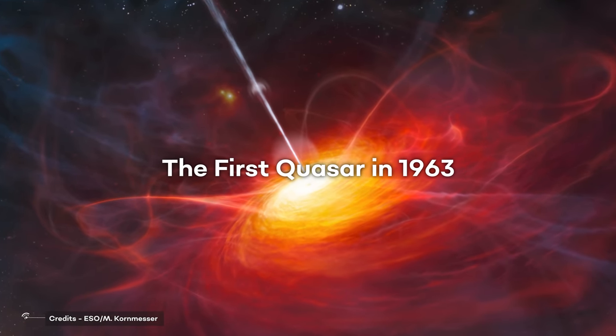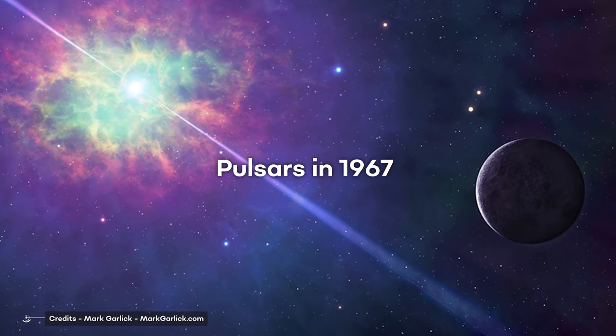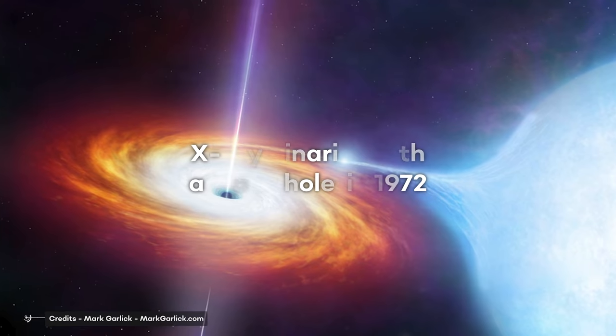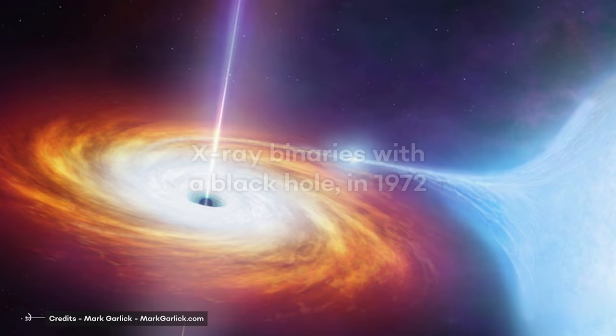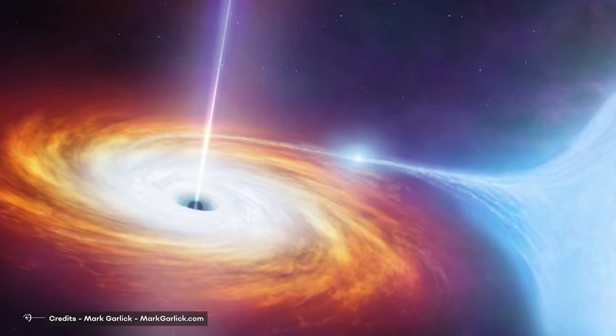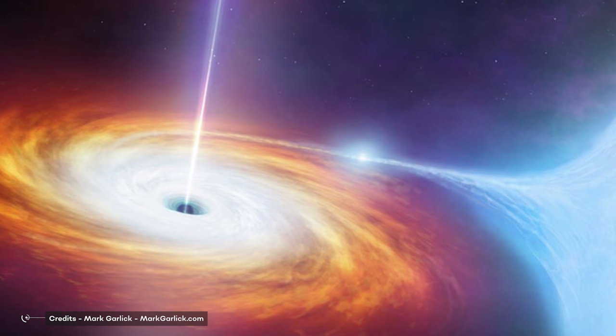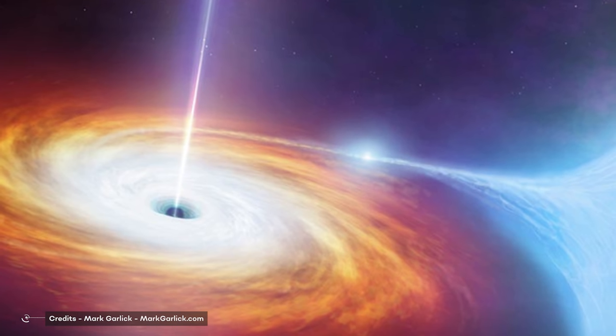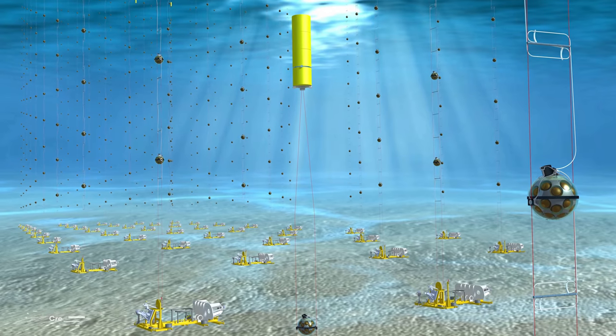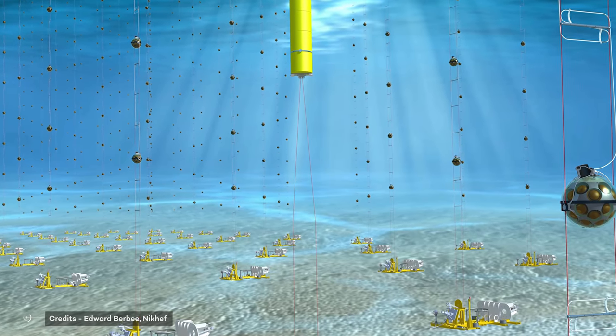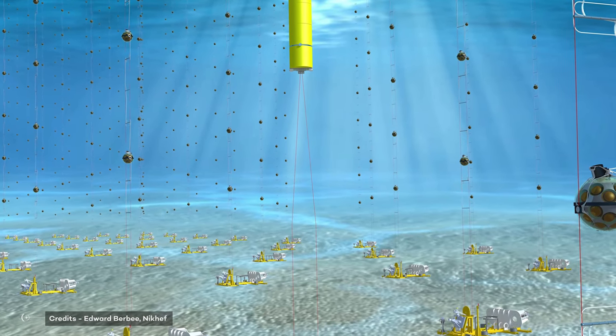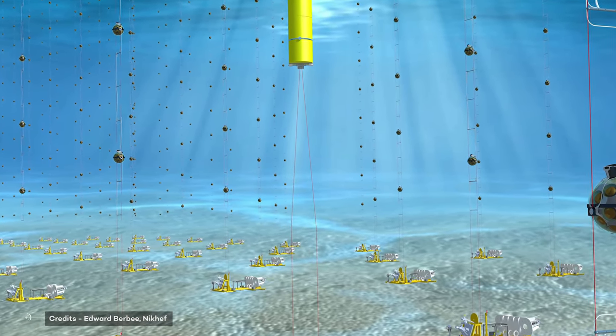For example, the first quasar in 1963, pulsars in 1967, and X-ray binaries with a black hole in 1972. These objects were identified as possible neutrino emitters, which gave an enormous push to theoretical physics activity. Soon after, scientists understood the importance of building such telescopes and the importance of neutrinos in terms of cosmology, physics, and astrophysical processes.